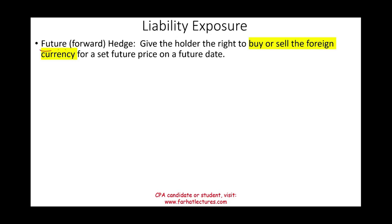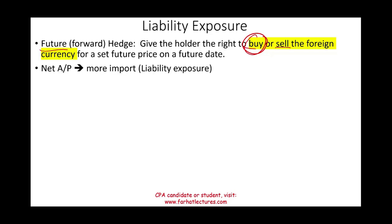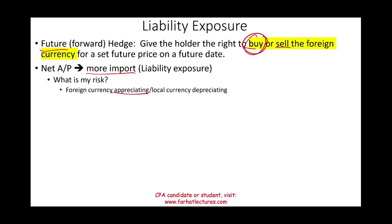If you have a liability exposure — like the 1 million Canadian dollar payable — you can buy a futures or forward contract that gives the holder the right to buy or sell the currency at a future rate. In our example, you want to buy the foreign currency at a locked price. If your net exposure is accounts payable, you are an importer with a liability exposure.